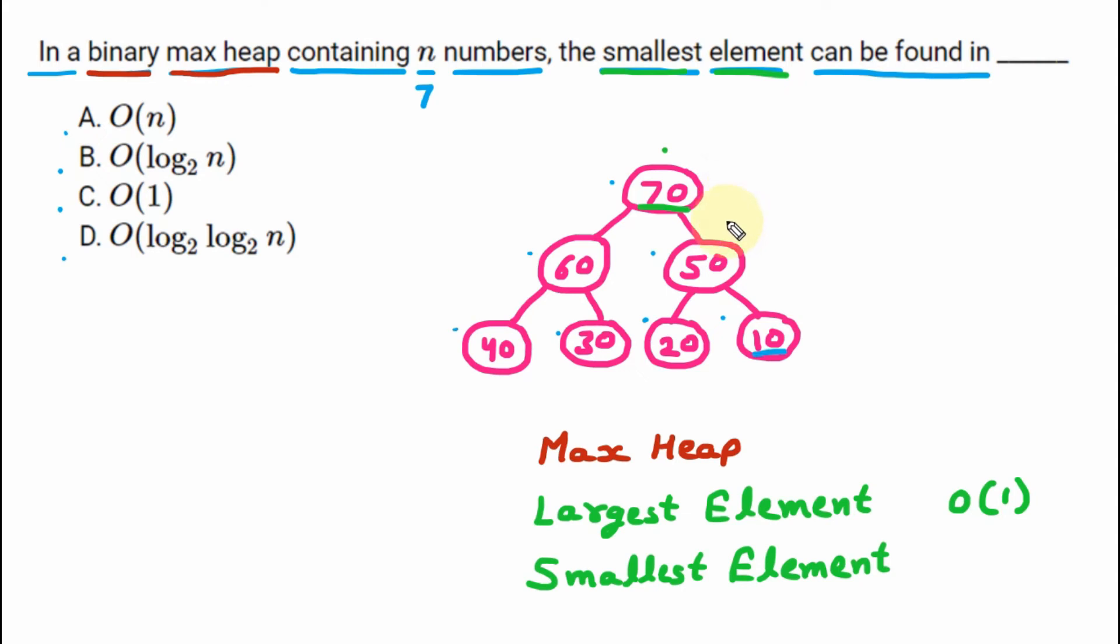We may think that for the smallest element, there are only three comparisons required means we start from the root and afterward go to 70, then 50, and then 10. We know that out of this tree, 10 is the smallest element. And to find this 10, we have only one, two, and three, three comparisons.